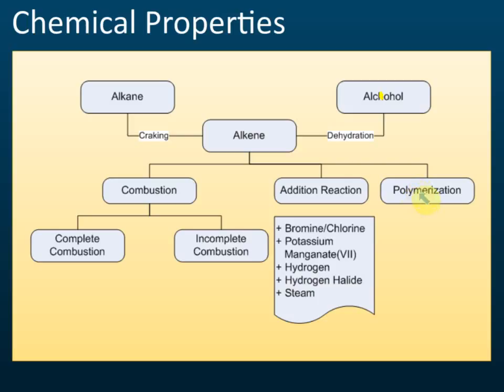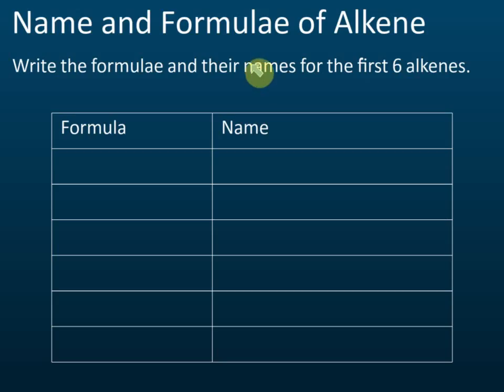The last chemical reaction is polymerization. We will discuss polymerization of alkene in detail later. That is the summary of the chemical properties of alkene.